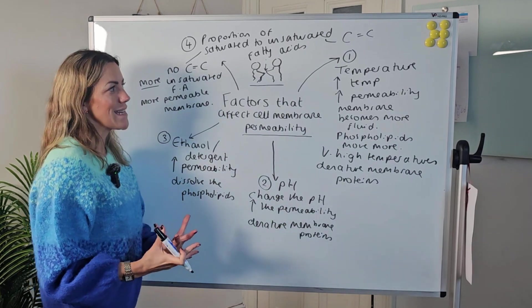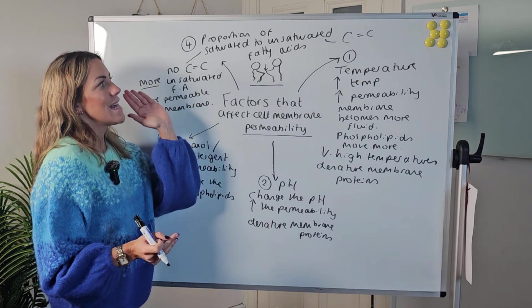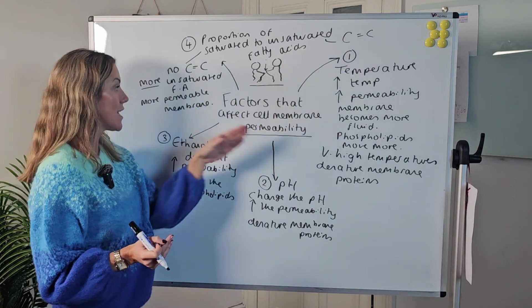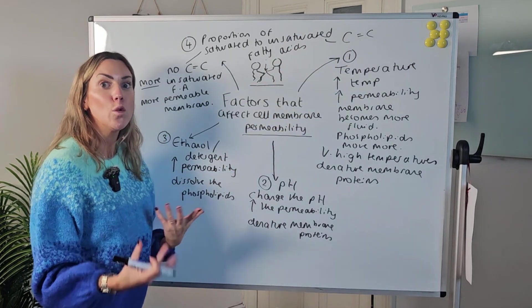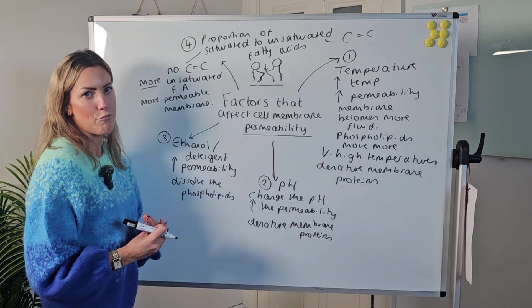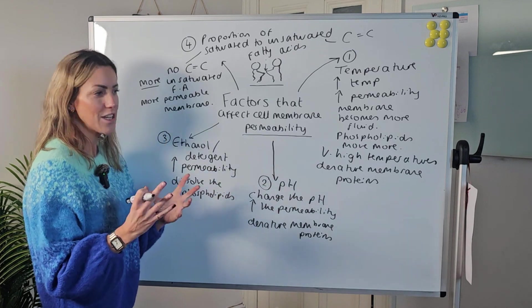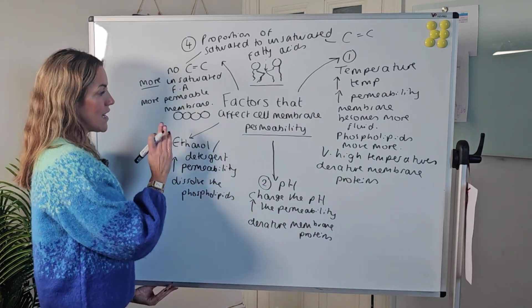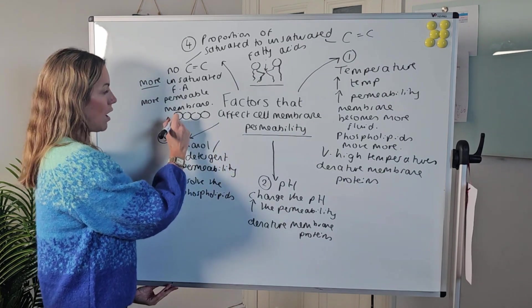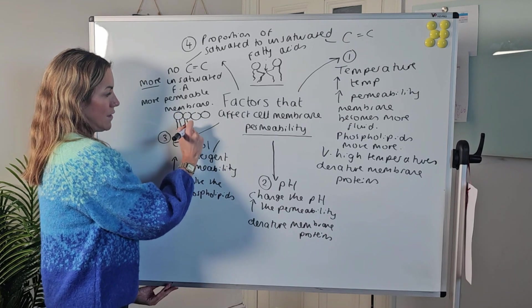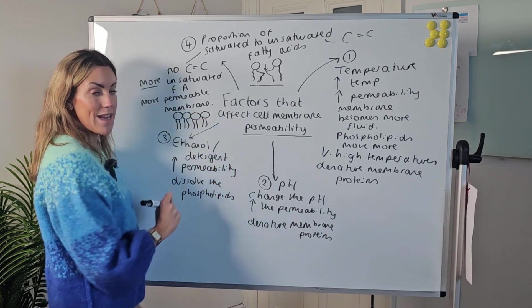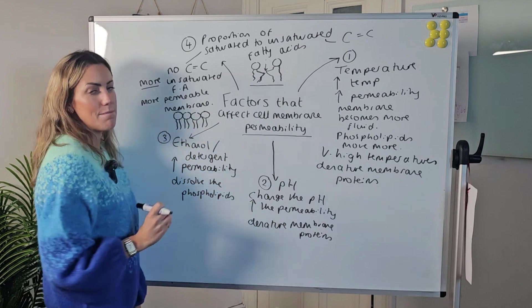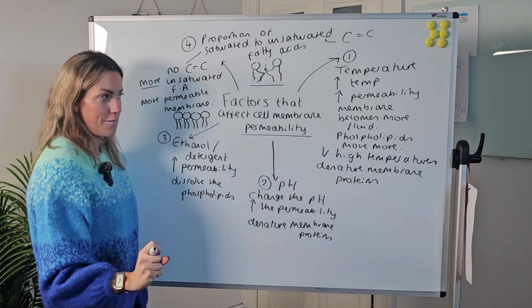What you really need to appreciate is the higher the proportion of unsaturated fatty acids, the more permeable and the more fluid the cell surface membrane will be. If you've just got saturated fatty acids, they're all saturated with no carbon-carbon double bonds, the fatty acid tails are straighter, and therefore the fatty acids pack closely together. That means the membrane is less permeable and less fluid.